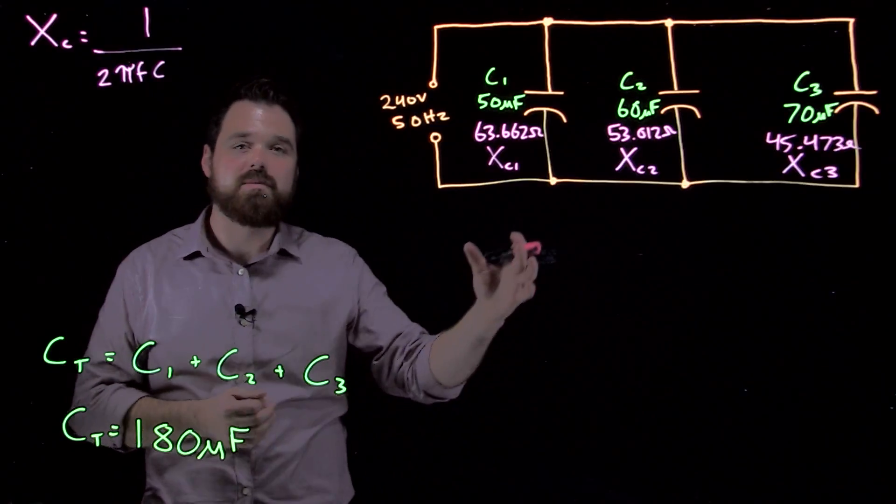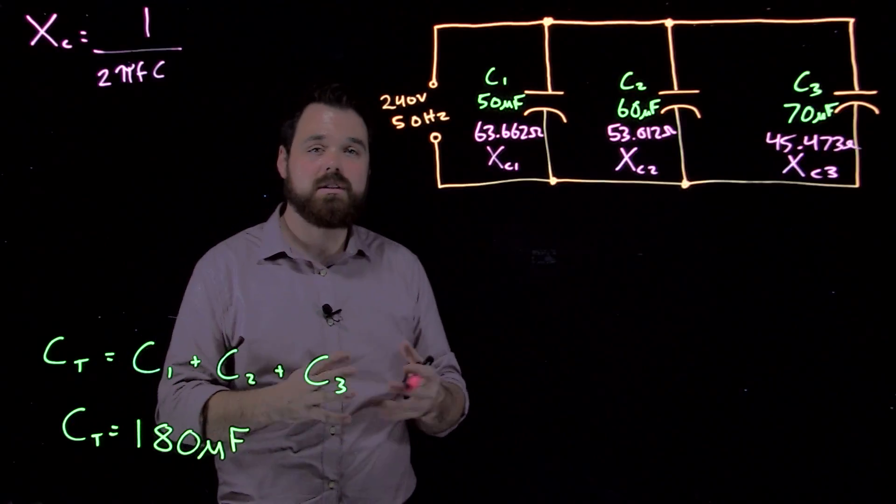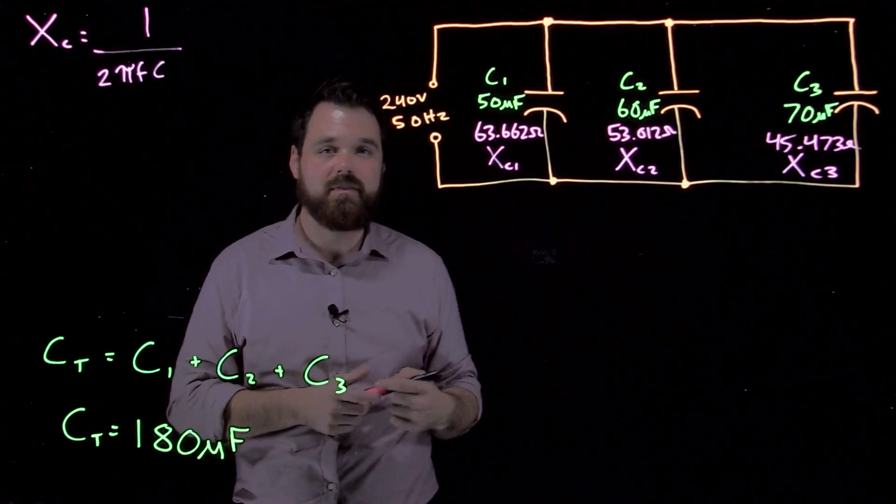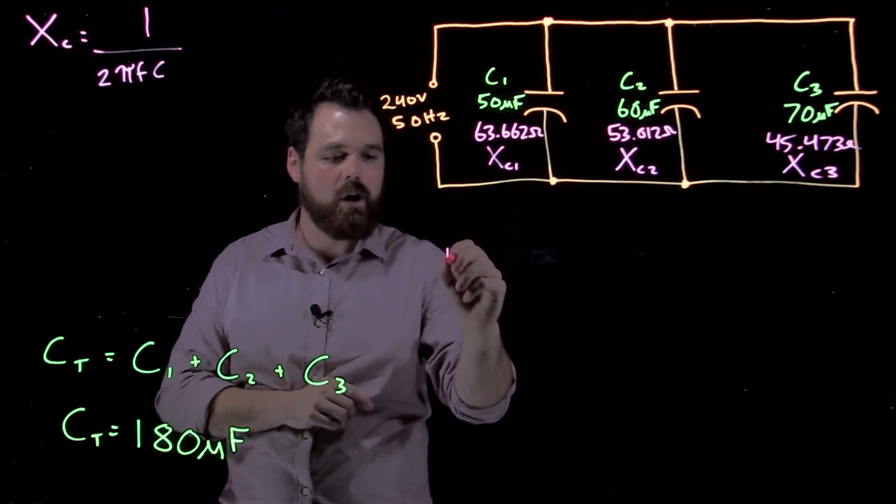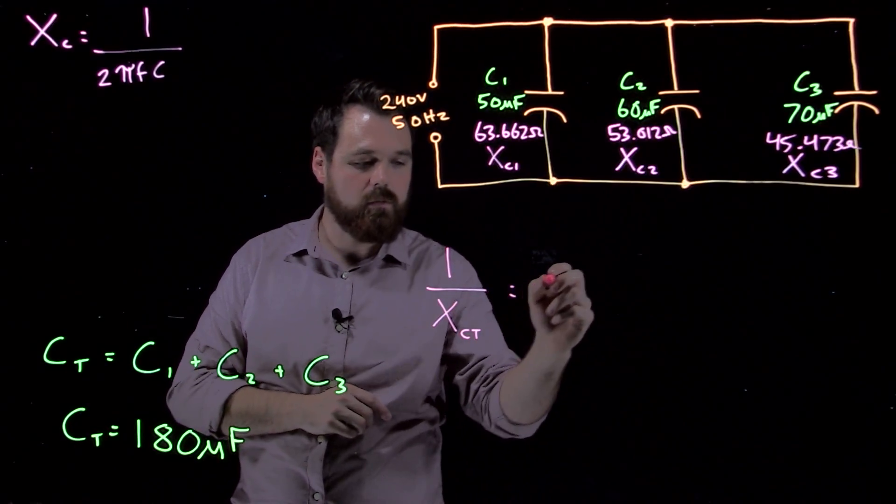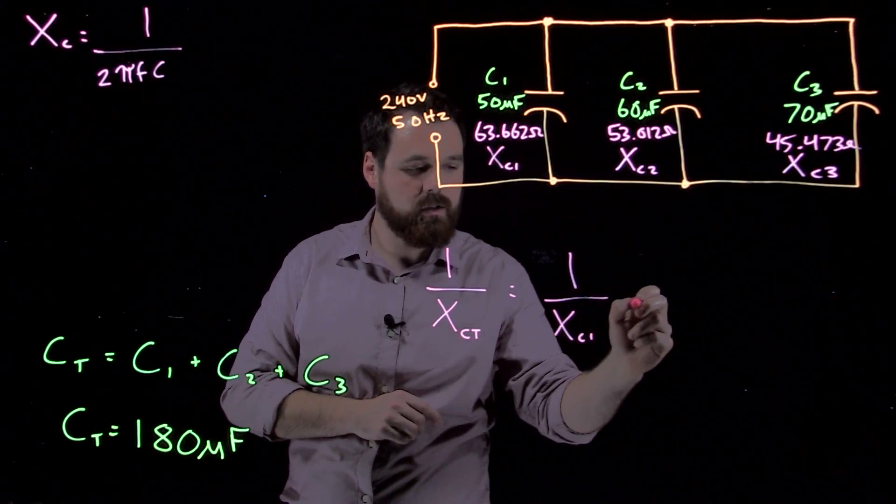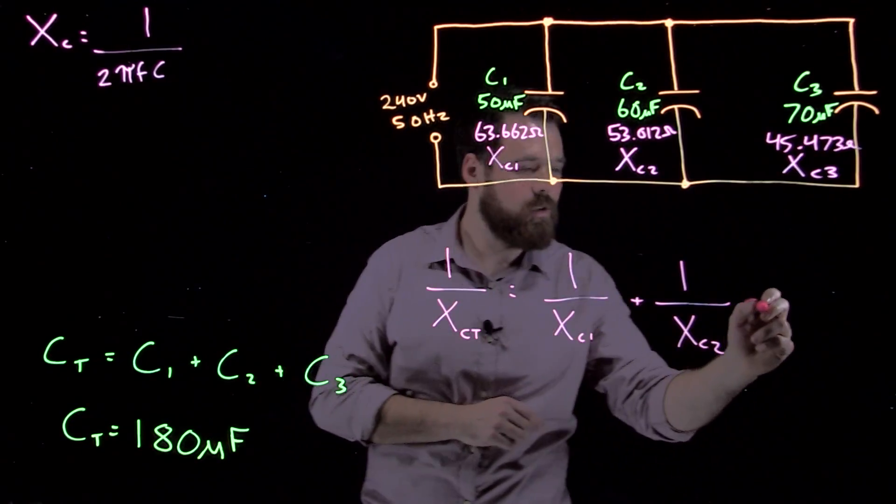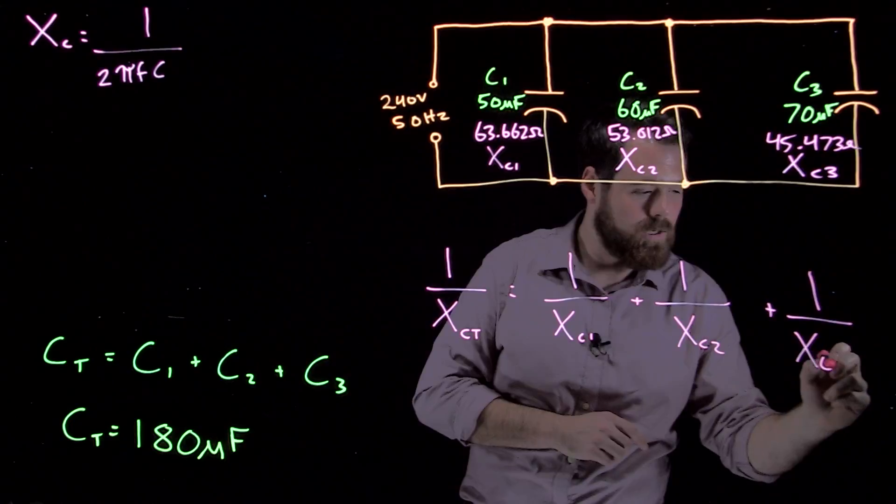Well, we know it's measured in Ohms. We also know, like inductive reactance and resistance, capacitive reactance is going to be added inversely for Ohms. So we see a formula. Of course, we get 1 over XCT equals 1 over XC1 plus 1 over XC2 plus 1 over XC3.